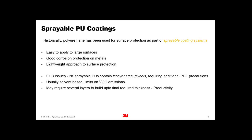Another problem is the balance between individual fan blades or rotor blades. Maintaining a consistent caliper on a sprayable polyurethane is a lot more difficult. The mass between individual blades needs to be controlled, and it's a lot more difficult to do that with a spraying process than with a tape process.